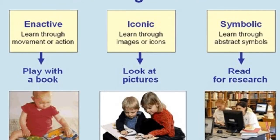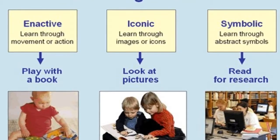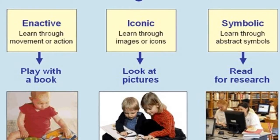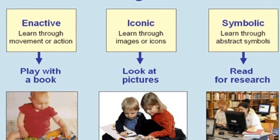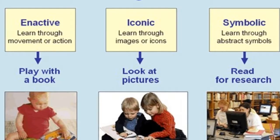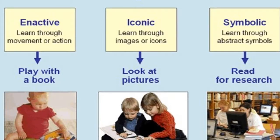In his research on the cognitive development of children, Bruner proposed three modes of representation. A mode of representation is the way in which information or knowledge is stored and encoded in the memory. The three modes are: enactive, learning through movement or action; iconic, learning through images or icons; and symbolic, learning through abstract symbols.